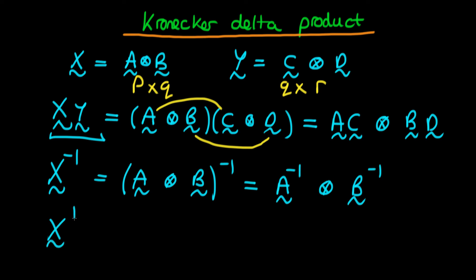Similarly, if we define the transpose of the matrix X, that's equivalent to the transpose of the Kronecker product of A with B. And it follows exactly the same rule as the inverse. This is equivalent to the Kronecker product of the transpose of A with the transpose of B.